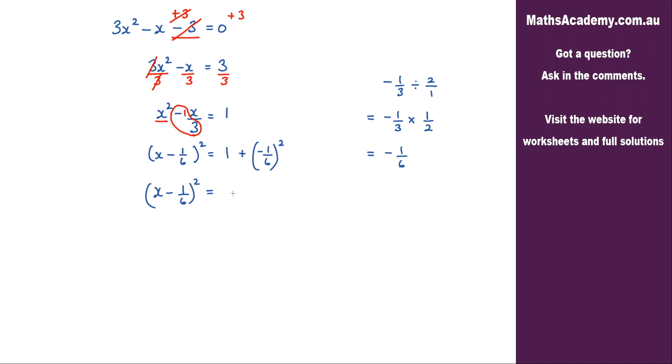On the right hand side, let me just do it over here. I've got the 1 plus, now the negative 1 squared would be 1 and the 6 squared would be 36. So I've got 1 plus 1 over 36. Well this 1 we can actually write that as 36 over 36. So I'm adding 1 over 36 plus 36 over 36, which is 37 over 36.